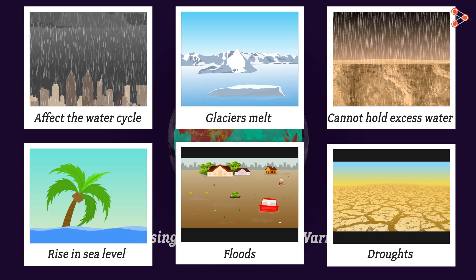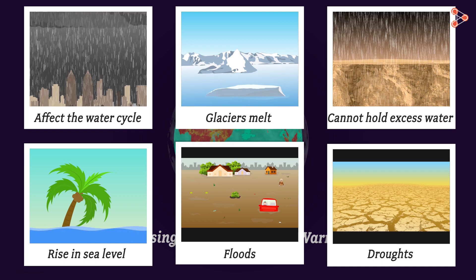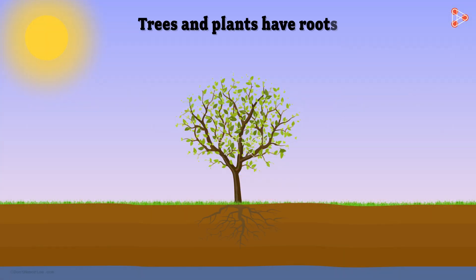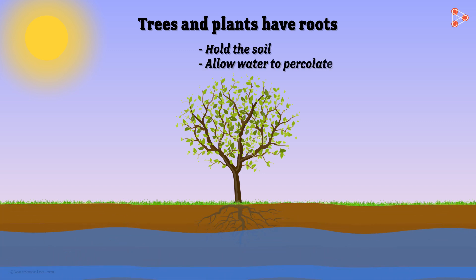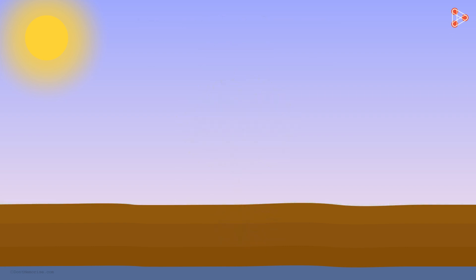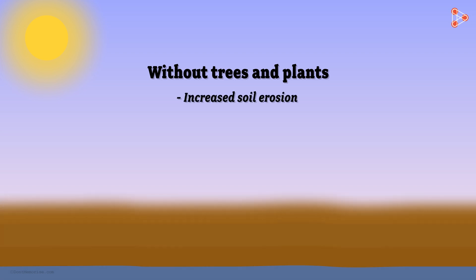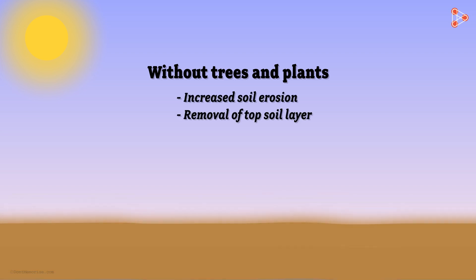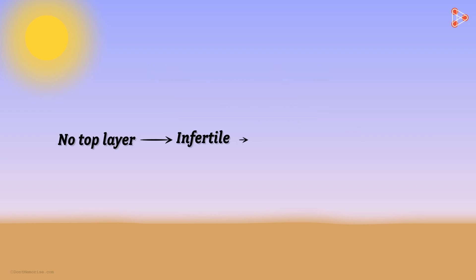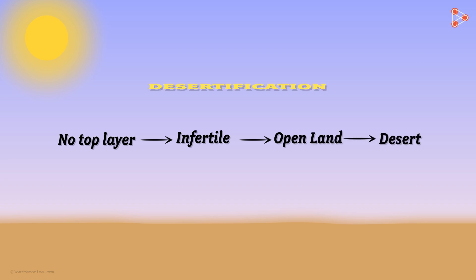Let us see how the water table is affected due to deforestation. Trees and plants have roots which hold the soil and allow water to percolate into the soil. With trees around, water does not run off carrying away the topsoil. Absence of trees causes increased soil erosion, removal of the topsoil layer, and reduced underground water levels. Soil that is devoid of its top layer is infertile, and gradually open lands become deserts.